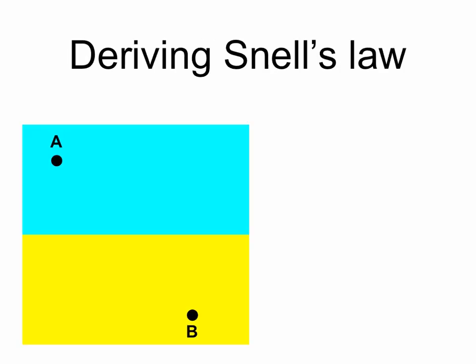Let's consider two points, A and B, in two different materials. A is in a blue material through which light travels at speed v1, while B is in a yellow material through which light travels at speed v2.